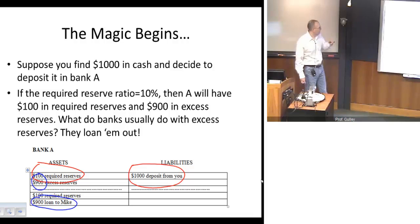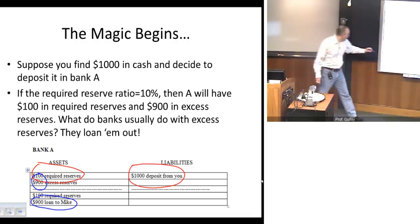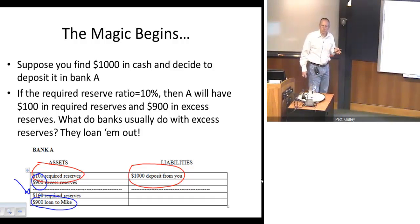How does their balance sheet change? Well, nothing on the right side changes because they still owe you that $1,000. However, the left side, the asset side, changes. They still have the $100 in required reserves, and they have that because they still have your $1,000 deposit. But now also notice that they have made a $900 loan to somebody else. So the bank's balance sheet has changed so that on the left side, now they have the $100 required reserve and the $900 loan. And so, what we want to do is investigate where does that $900 loan go?